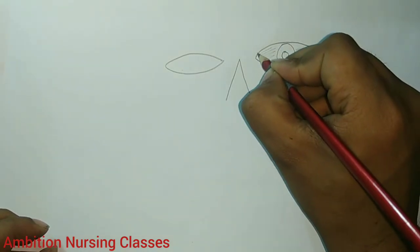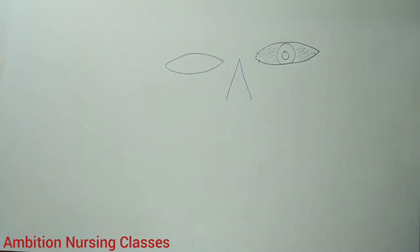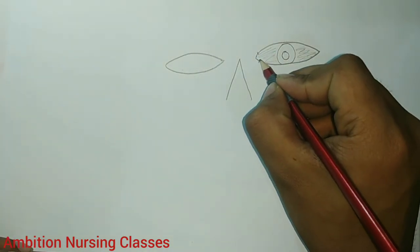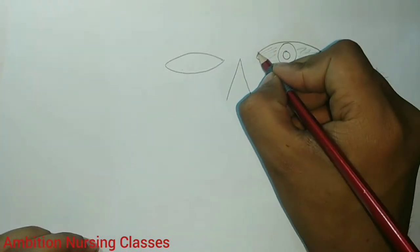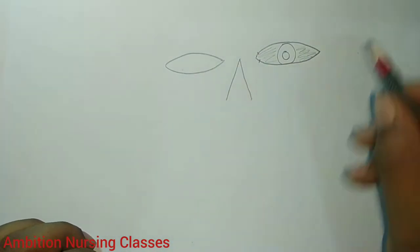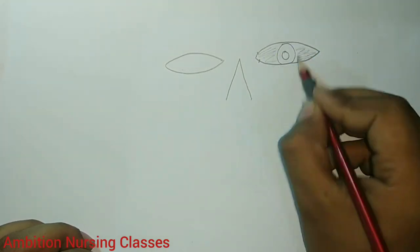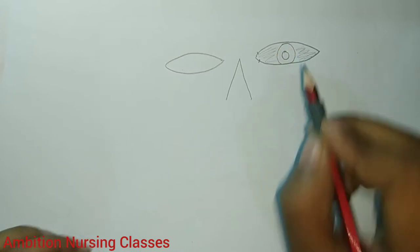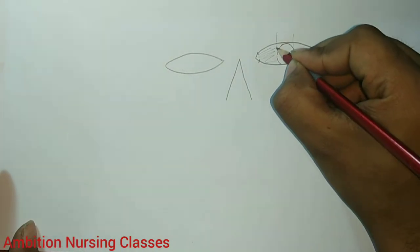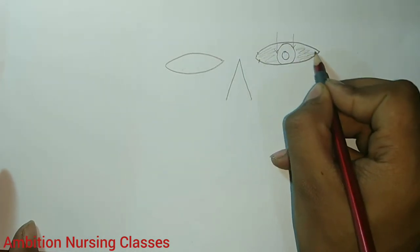There will be a small hole known as the punctum, which is required to drain fluids. This is the upper canaliculi and lower canaliculi — canaliculi means a drainage pathway. Remember, the junction of the conjunctiva, the junction of the sclera and the cornea, is known as the limbus. The limbus will be somewhere in this area.